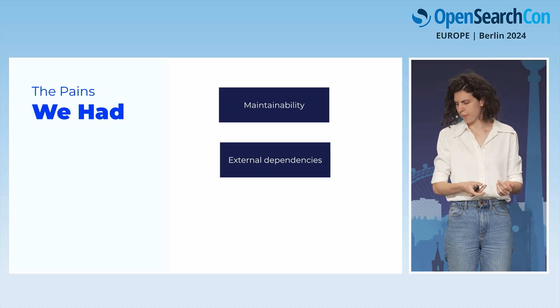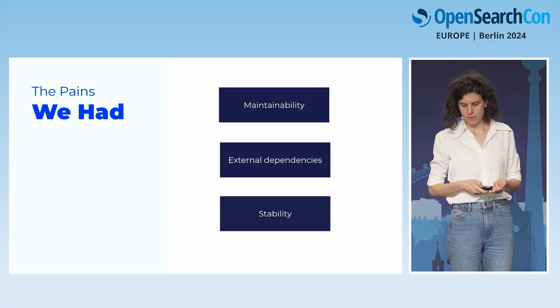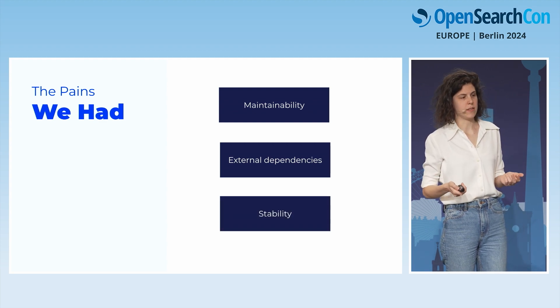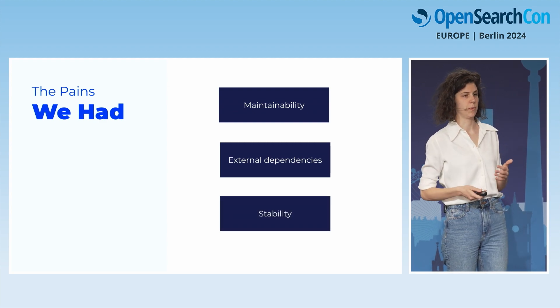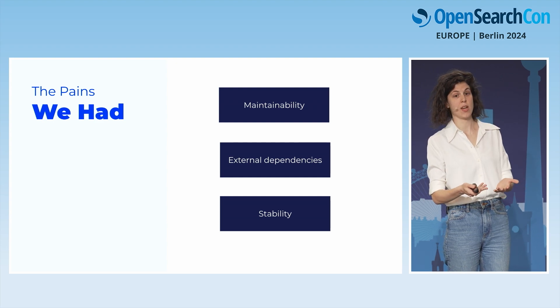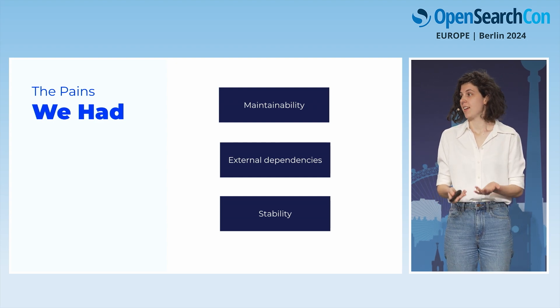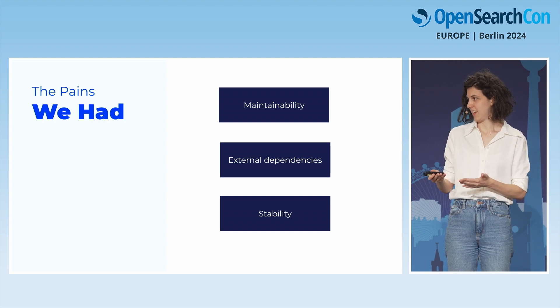The second pain was dependency on external teams such as DevOps. Even though our DevOps team is amazing, every time we have dependency on an external team, things get a bit slower. The third pain was stability: we had a lot of manual operations, and manual operations mean human errors from time to time, which might result in incidents — and as a super business-critical system, we couldn't allow incidents.